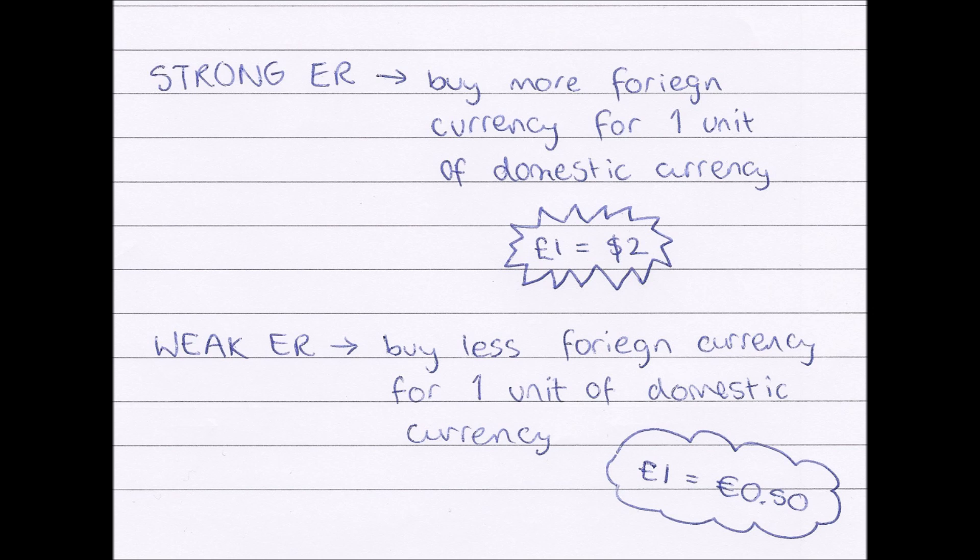Exports out of Britain will decrease because it becomes more expensive for Americans to buy British goods. For example, if an American has two dollars they can buy two packets of American pens, but because two dollars only equals one pound, they could only buy one packet of British pens. So they won't import as much British goods, meaning Britain won't export as much. With a strong exchange rate, imports will be high and exports will be low.